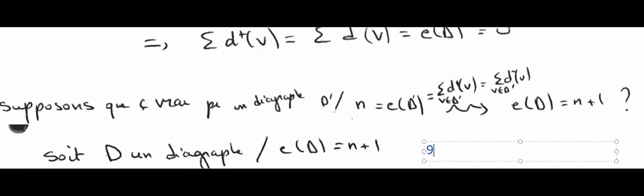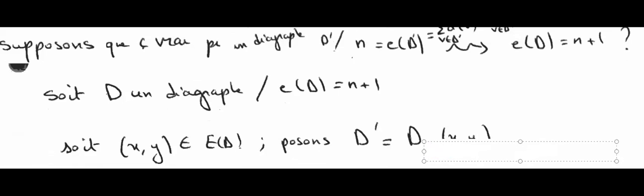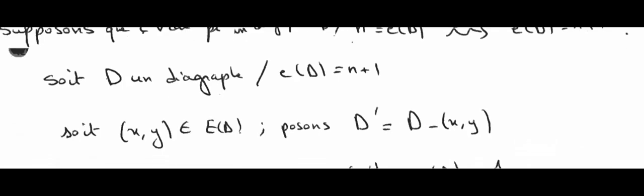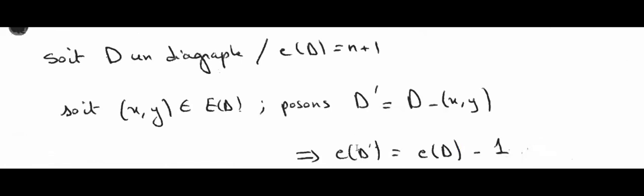Let's try this. Take an arc xy. So let's say xy is an arc in D. Let's say D' is D minus this arc. So I'm constructing D' which has n arcs.